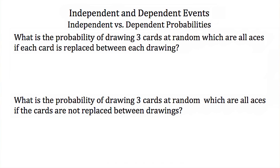Now let's compare the probabilities of independent and dependent events. First, let's do an independent event. What is the probability of drawing 3 cards at random which are all aces, if each card is replaced between each drawing? If I draw an ace the first time, I put it back into the deck, so my odds are the same each time. The probability of A and B and C happening is just equal to the probability of A times the probability of B times the probability of C.